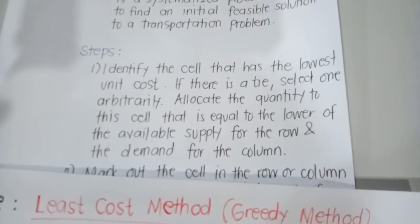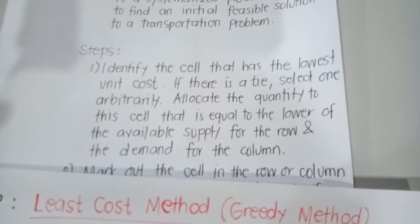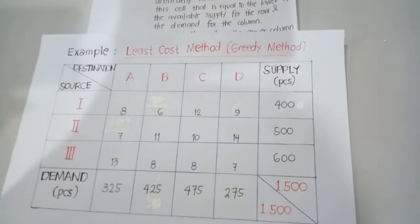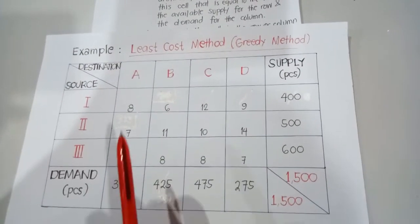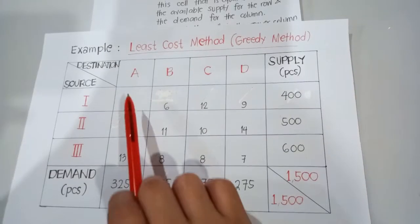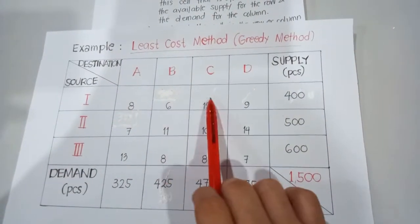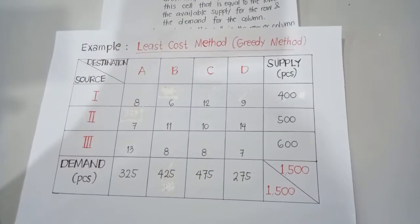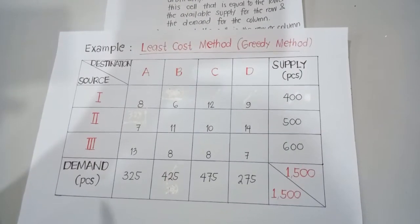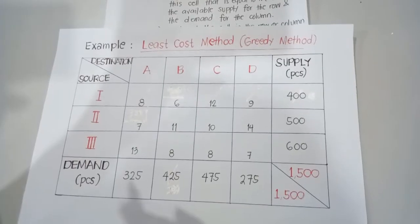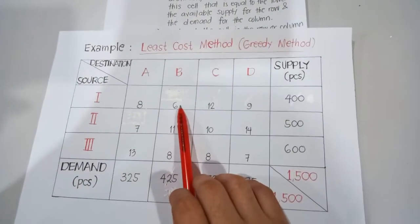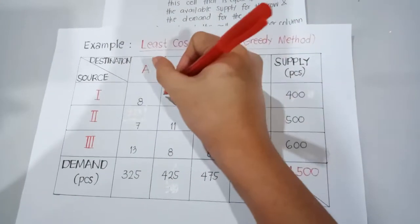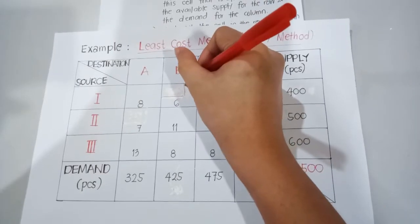Allocate the quantity to this cell that is equal to the lower of the available supply for the row and the demand for the column. Going back to our problem, we have 12 different transportation costs. With respect to these costs, the least cost is 6. Therefore, this is the cell in which we will do our first allocation — this is where we will allocate first.